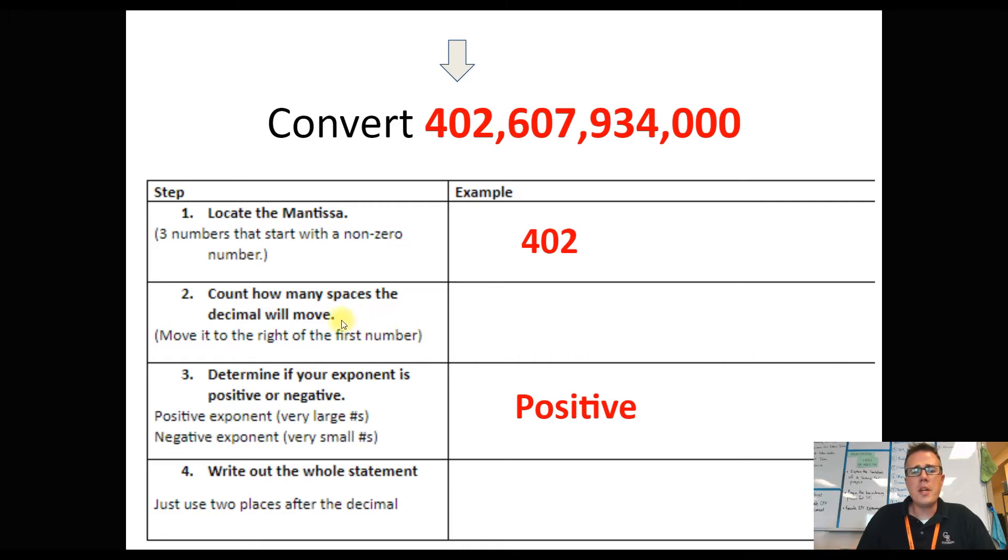Step two. We need to count how many spaces the decimal will move. Well, the goal is to get the decimal to be right after the first number. So kind of like when we were doing metric, we're moving the decimal place. So normally the decimal is way down here, and we're going to move it all the way down. So that's 1, 2, 3, 4, 5, 6, 7, 8, 9, 10, 11 spots we have to move it to make it go between the 4 and the 0.